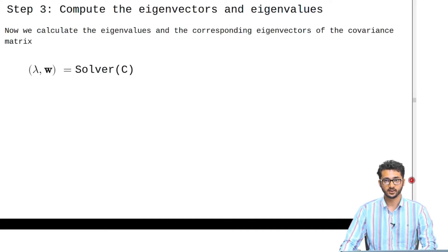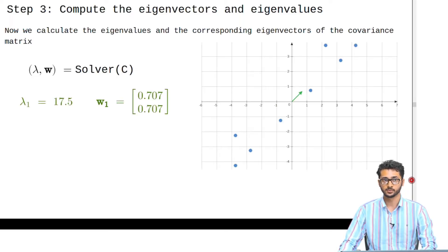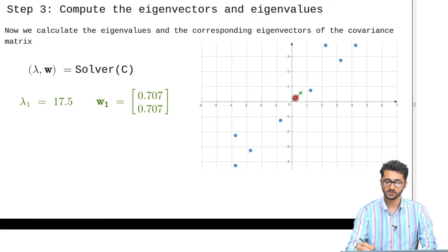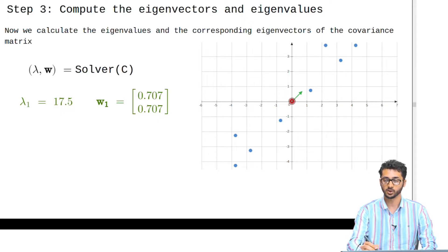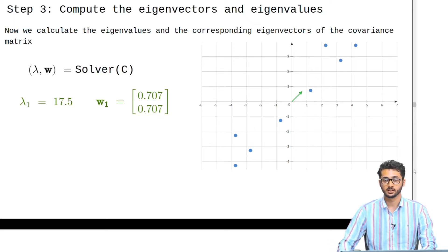The computation of eigenvalues and eigenvectors is covered in the machine learning foundation course. We will use a function called solver which takes in the covariance matrix C and gives us lambda and w values — the eigenvalues and eigenvectors. The highest eigenvalue ends up being 17.5 and the corresponding eigenvector is as shown. This eigenvector is in the expected direction. The second eigenvector, or second principal component, has to be perpendicular to it, because it captures the error from projecting on the first principal component.